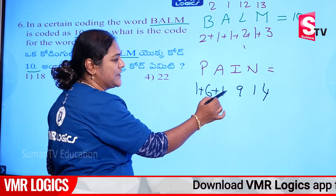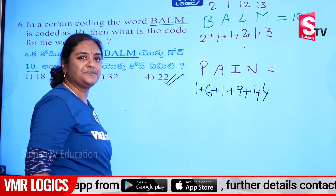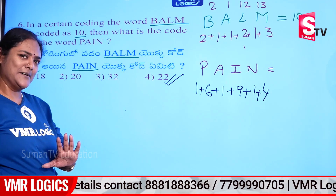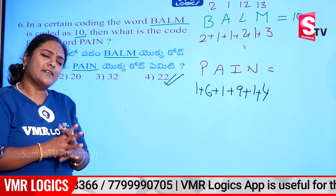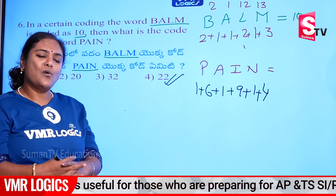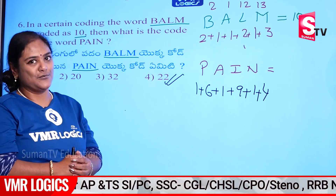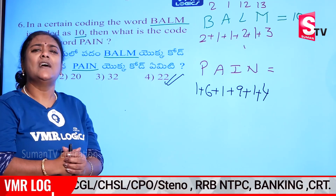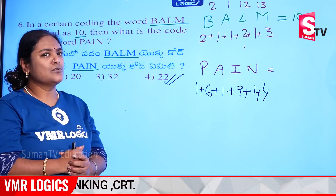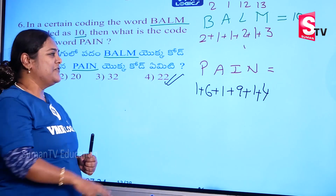Working through the values: 1, 6, 7, 1, 10, 9, 10, 11, 14 — giving 25, 25, 25. That's the logic! Friends, good. In number coding, there are different logic types: word-to-number using place values, single-digit logic, and more. Join VMR Logics — every model is discussed in detail. Your success is guaranteed; victory is certain.